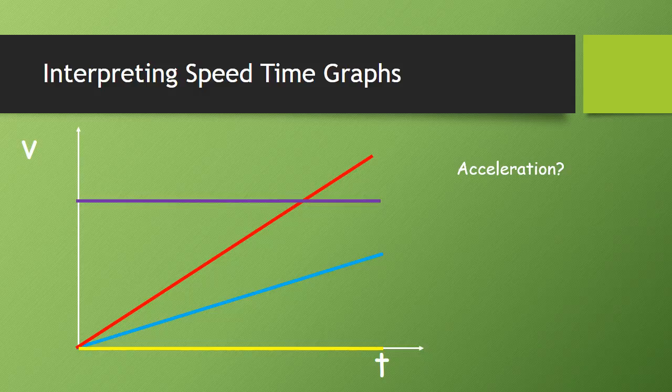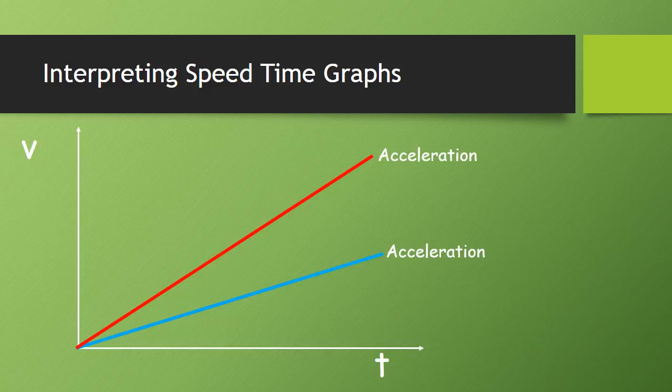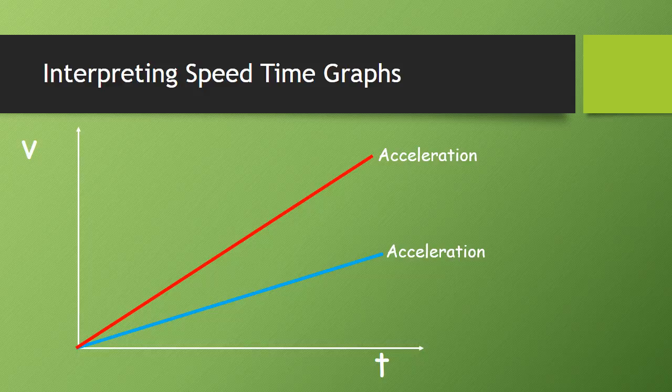Which one here shows acceleration? Again, a little bit of a trick, there's actually two correct answers. Both the red and the blue line show acceleration. The red line is a much higher acceleration because the speed is changing more quickly, but both show acceleration.